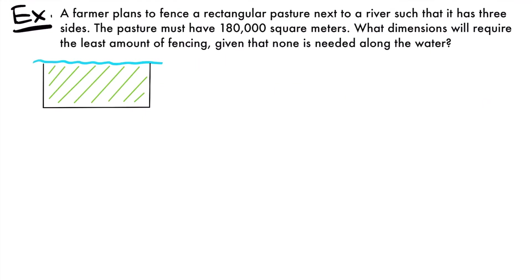Now let's look at another example. A farmer plans to fence a rectangular pasture next to a river such that it has three sides. The pasture must have 180,000 square meters. What dimensions will require the least amount of fencing, given that none is needed along the water? We have a diagram showing the setup. The two opposite shorter sides are labeled y and the longer side is labeled x.